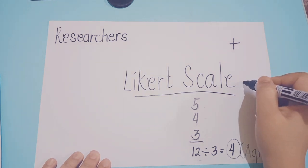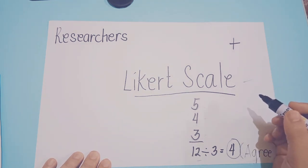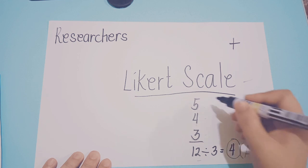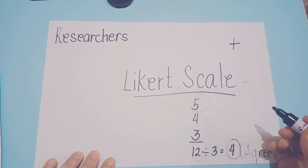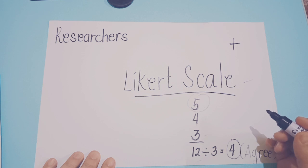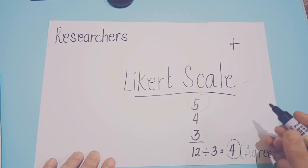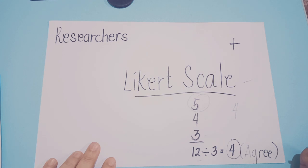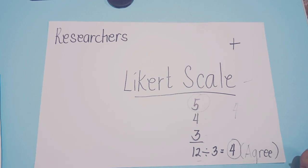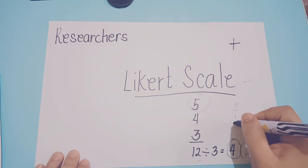Likert scales vary in the number of points on the scale. The 5-point scale used here is the most common. But some Likert scales have 4 points, where the 'not sure' or indecisive category is taken out. Some even have scales up to 7 points.